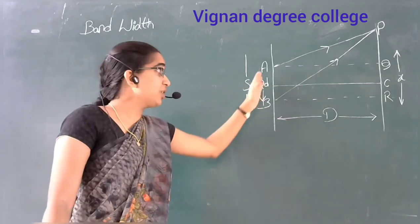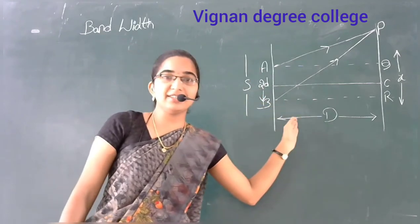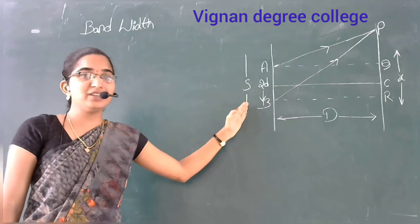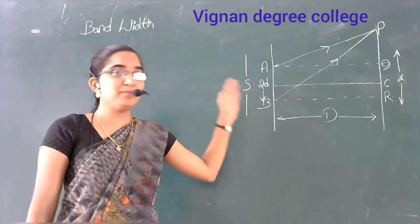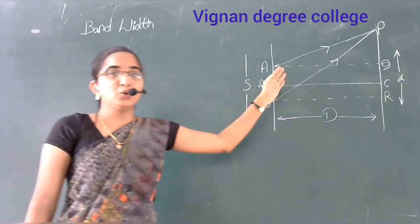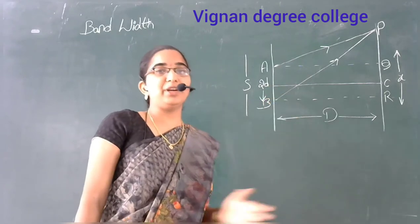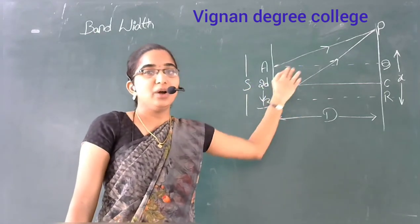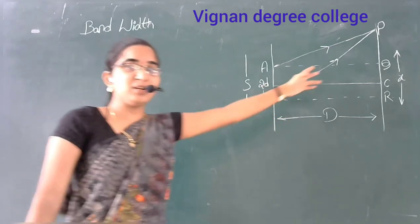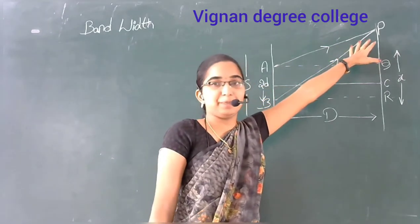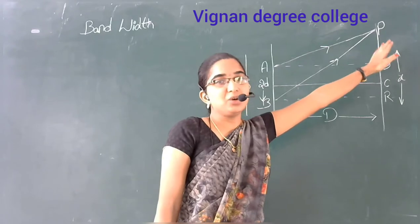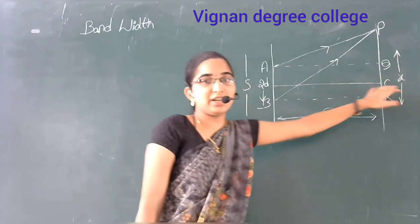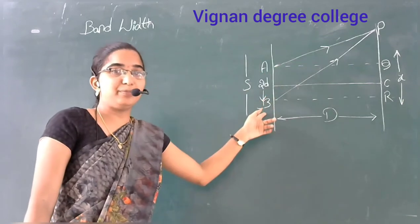The distance between the pinholes is 2d. A and B act as two coherent sources, equidistant from S. The next reaching point is P. Point C is equidistant from A and B.